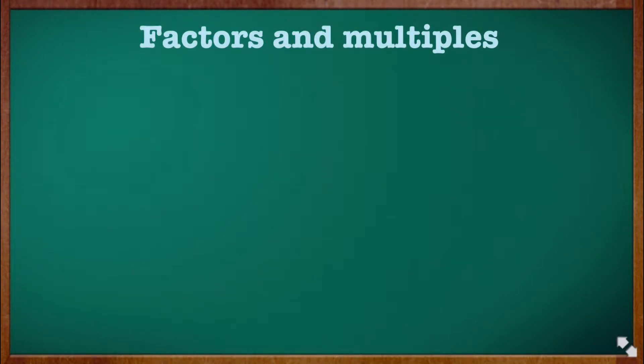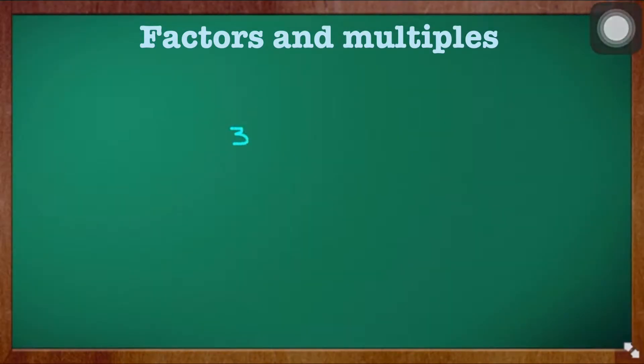In this video, we are going to learn about factors and multiples. First, let us consider the numbers 3 × 2 = 6. Here on the left-hand side, we have 3.